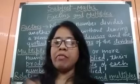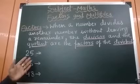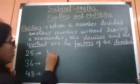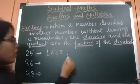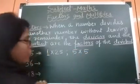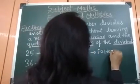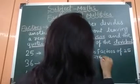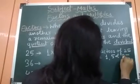Now we will see factors with some more examples. First number is 25. We can write 1 multiplied by 25, and 5 multiplied by 5. So the factors of 25 are 1, 5, and 25.